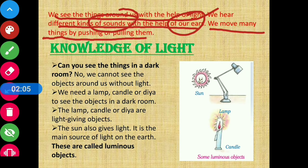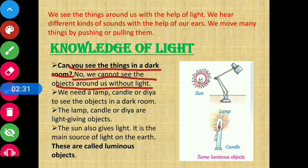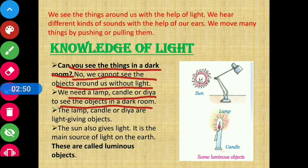So today we are going to start our discussion with the topic of light. Now, can you see things in a dark room? No, we cannot see objects around us without light. We need a lamp, candle, or torch to see objects in a dark room.